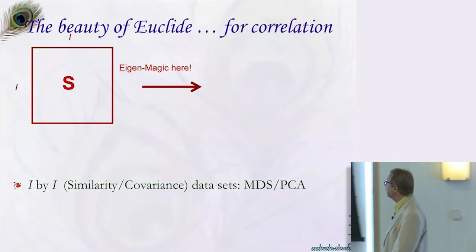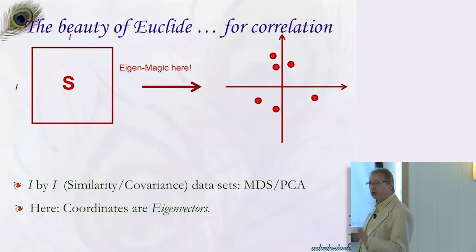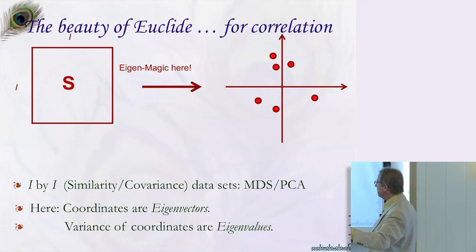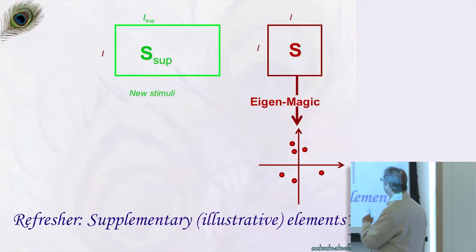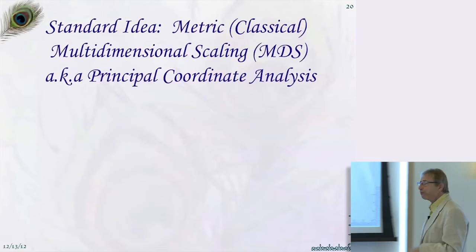For correlation, you start with a correlation matrix, apply the eigenmagic — eigen decomposition — which transforms that matrix into a picture. It gives us coordinates called eigenvectors, and the variance of these coordinates are called eigenvalues. A great property is that if you have elements you have not used, you can project them in the same space to see what they would look like.